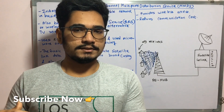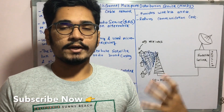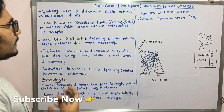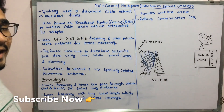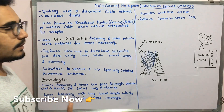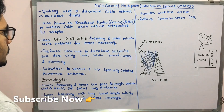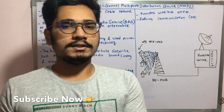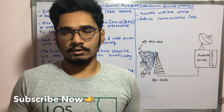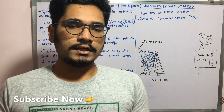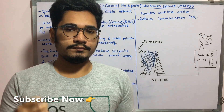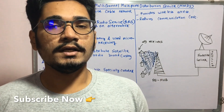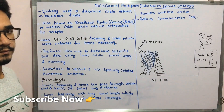MMDS is also known as Broadband Radio Service (BRS) or wireless cable, which is an alternative to the traditional television receptor. Where older televisions had older chips and CRT displays, modern televisions are being configured with systems capable of receiving MMDS, and so it is called the Broadband Radio Service (BRS).